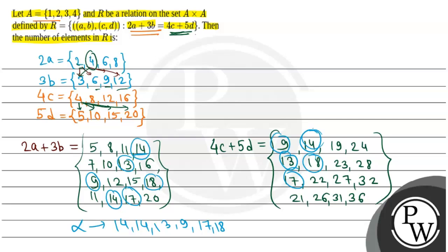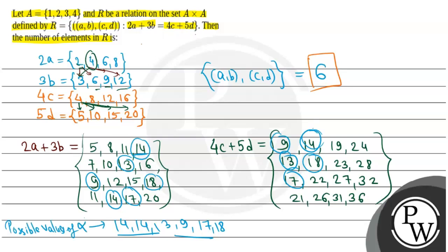This means the number of ordered pairs (AB, CD) that are possible is 6, because there are six possible values of alpha. Therefore, the number of elements in R is 6. Six elements will be present, and hence the final answer is 6. Hope you understood it well. Best of luck.